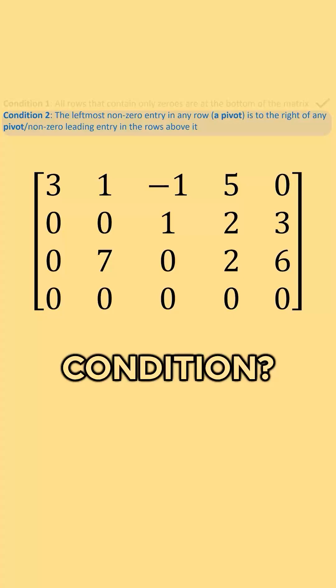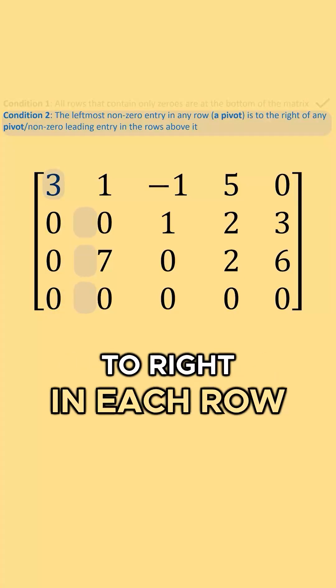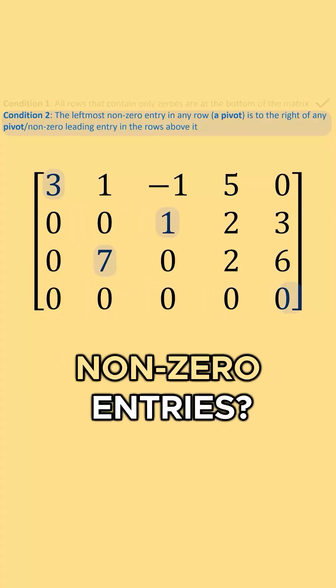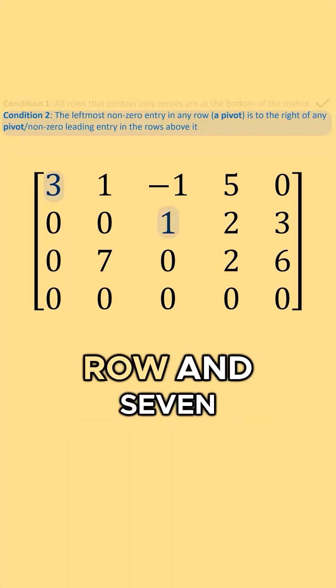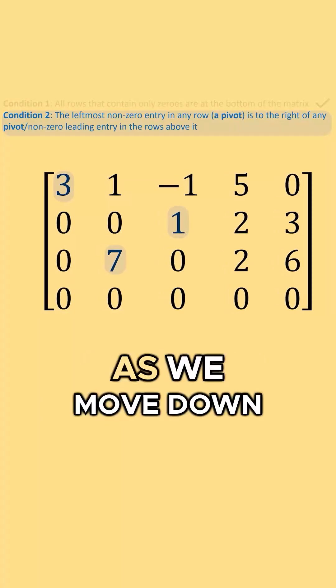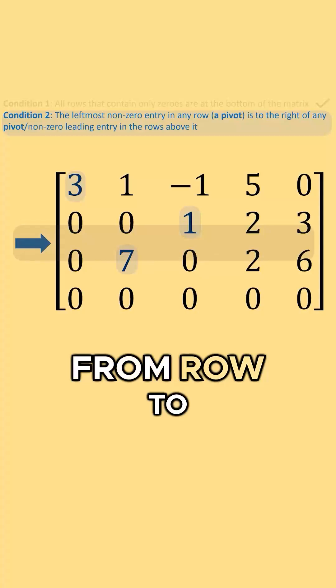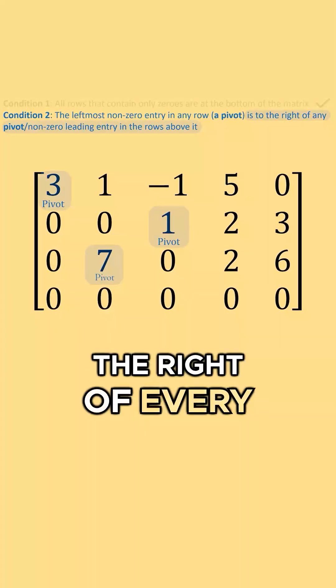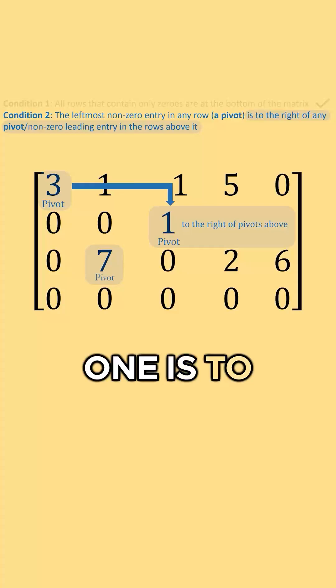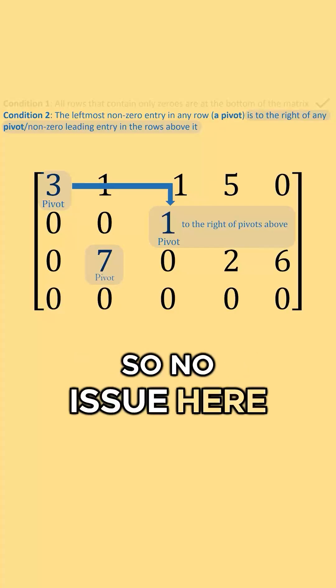What about this second condition? First, from left to right in each row, where are our first non-zero entries? Well, we have a 3 in the top row, 1 in the second row, and 7 in the third row. As we move down from row to row, are these leading entries, which we call the pivots, to the right of every pivot above them? 1 is to the right of 3, so no issue here.